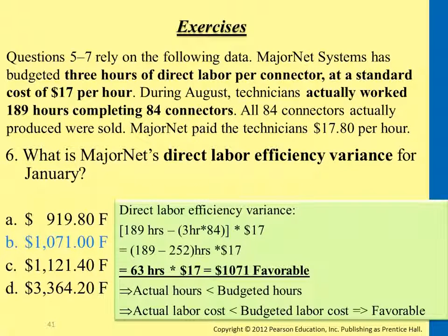So there were 63 hours saved times $17. This is considered favorable.